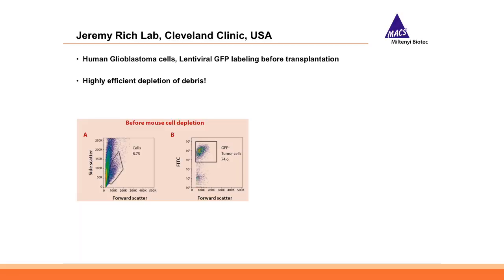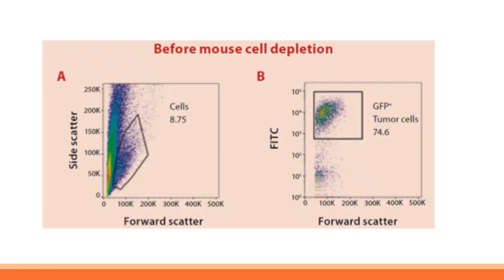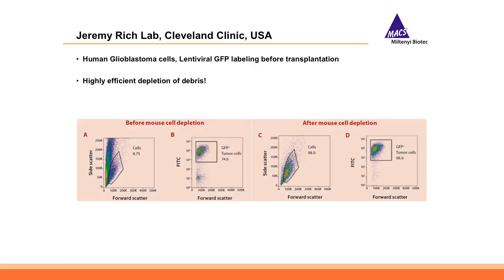A further observation first made in a customer lab — Jeremy Rich at the Cleveland Clinic — working with glioblastoma xenografts: they take glioblastoma cells, lentivirally label them with GFP, and orthotopically graft them into the mouse brain. After a few weeks they dissociate whole mouse brains. Adult brain dissociation yields mostly debris and dead cells due to myelin, so only about 9% of the recovered cells are the tumor cells. Next to removing mouse cells, we are also able to deplete the vast majority of debris and dead cells, giving a very cleaned-up sample that benefits all downstream analysis.